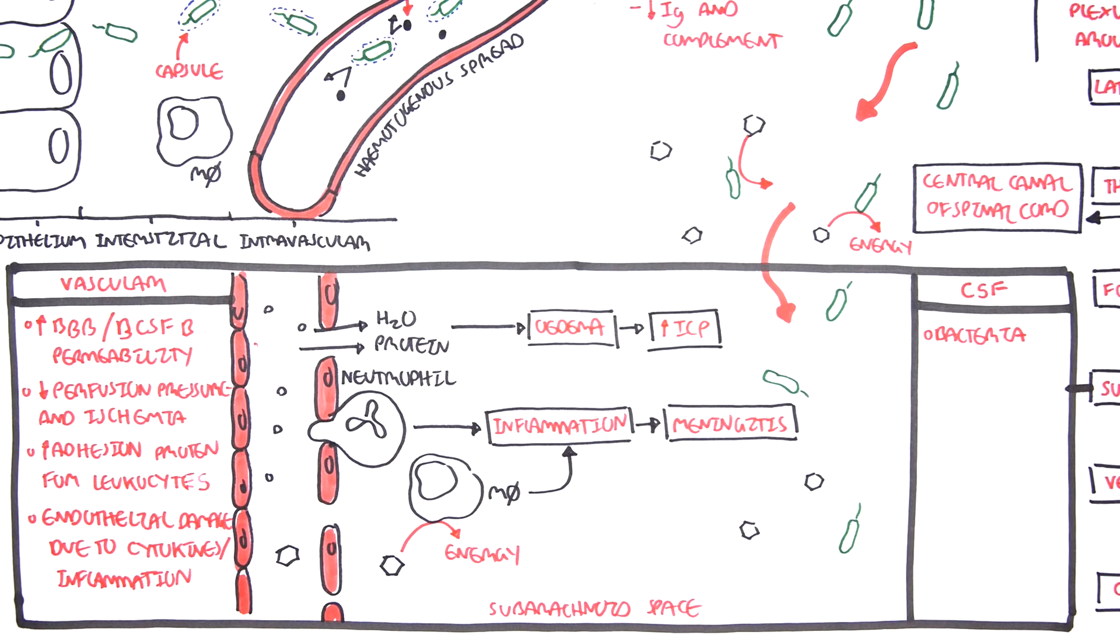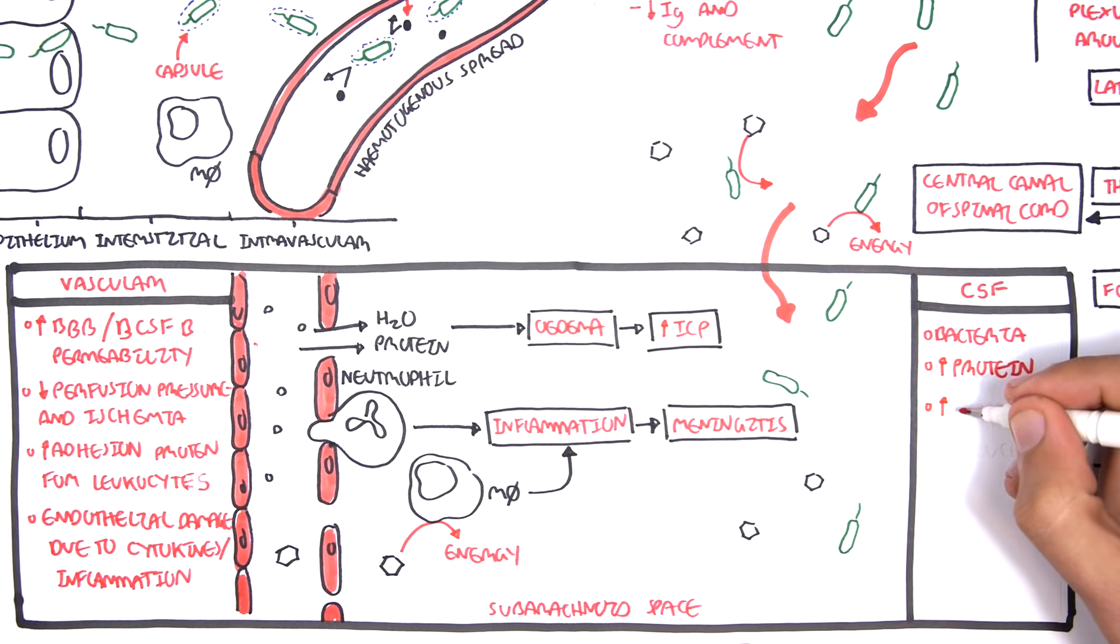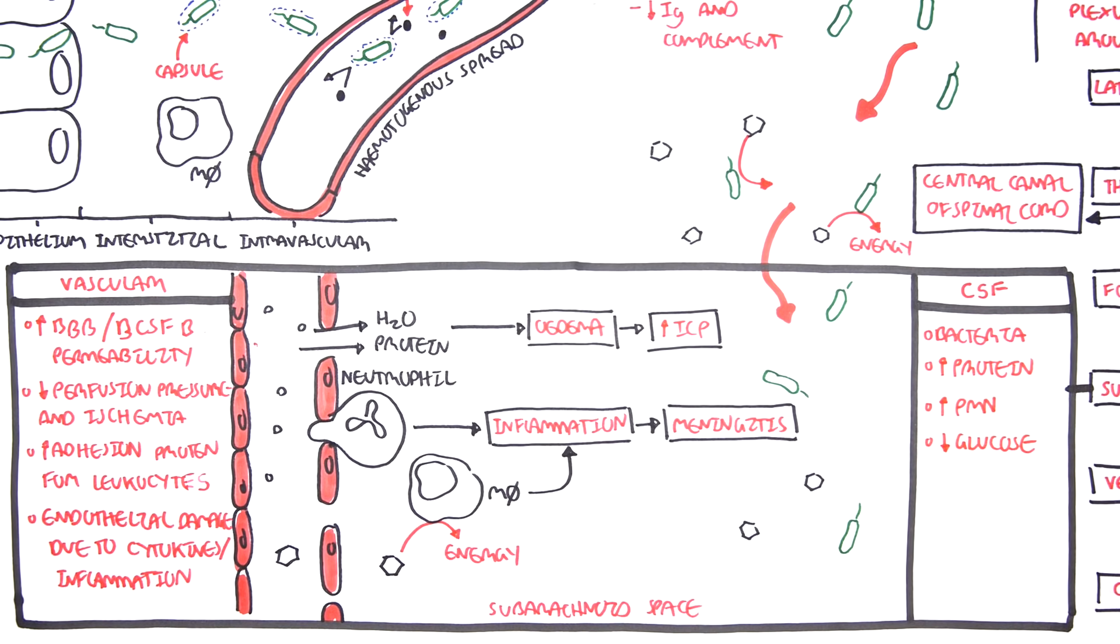Therefore if you are to perform a lumbar puncture on someone you suspect to have bacterial meningitis, in the cerebrospinal fluid from the lumbar puncture you would find bacteria, increase in proteins, increase in neutrophils and decrease in glucose. Due to the irritation and inflammation of the meninges, the classical signs and symptoms of meningitis include fever, headache, photophobia, nausea, vomiting, neck stiffness.